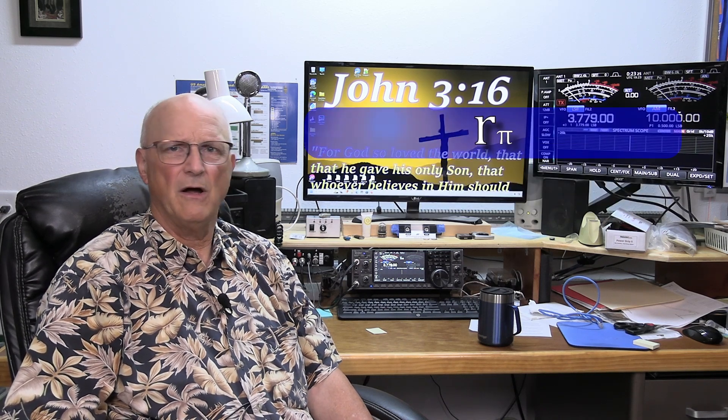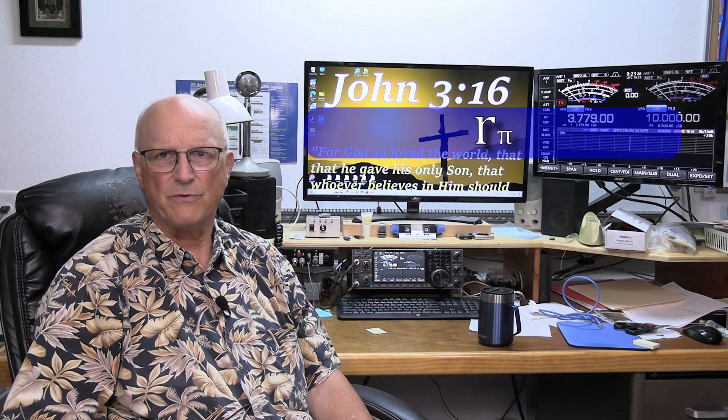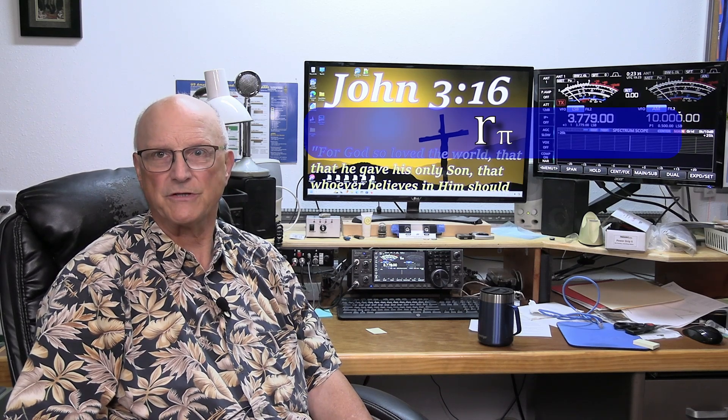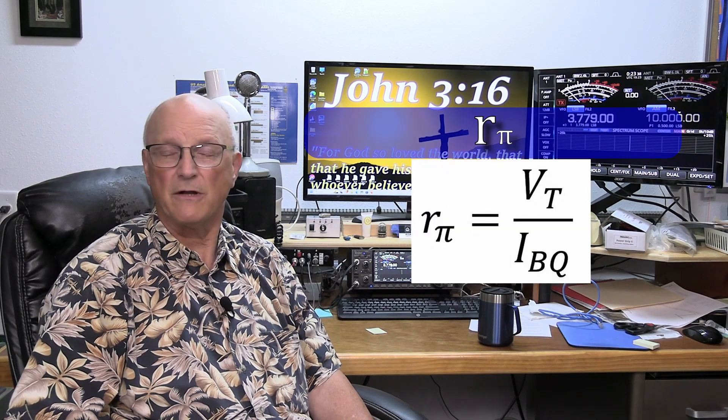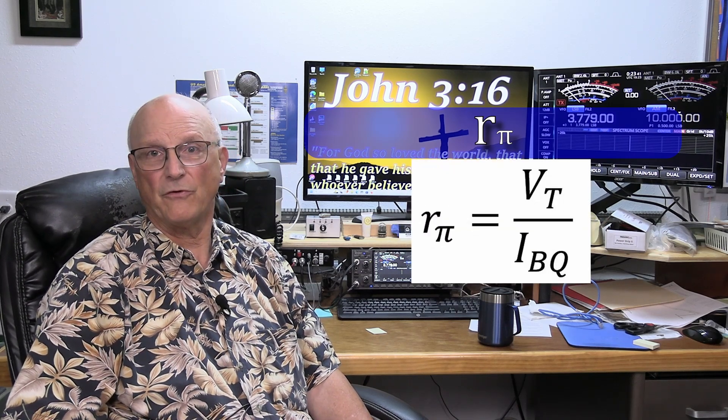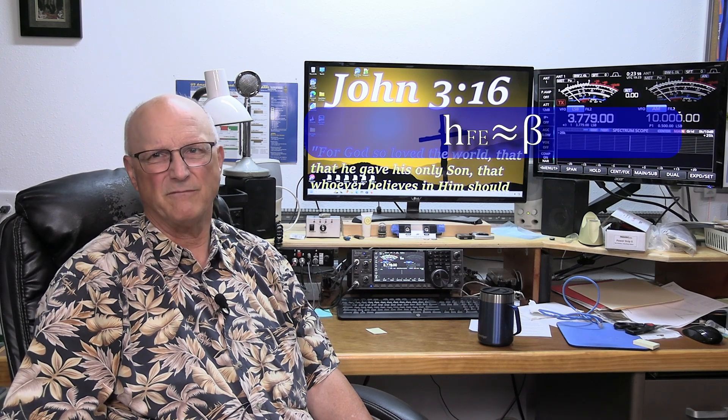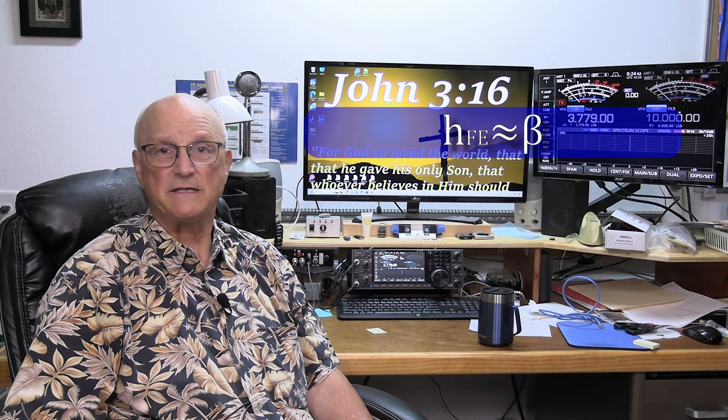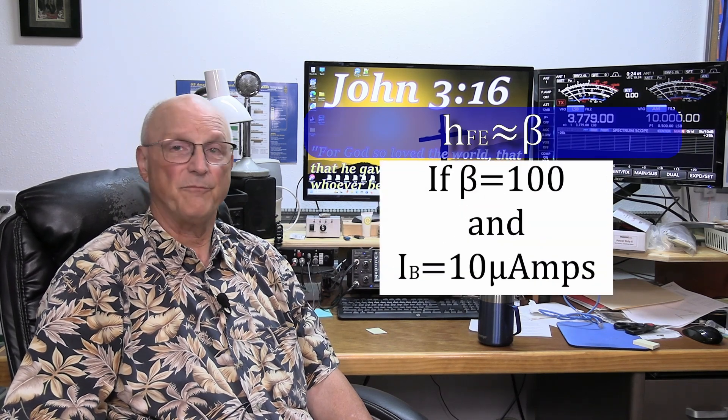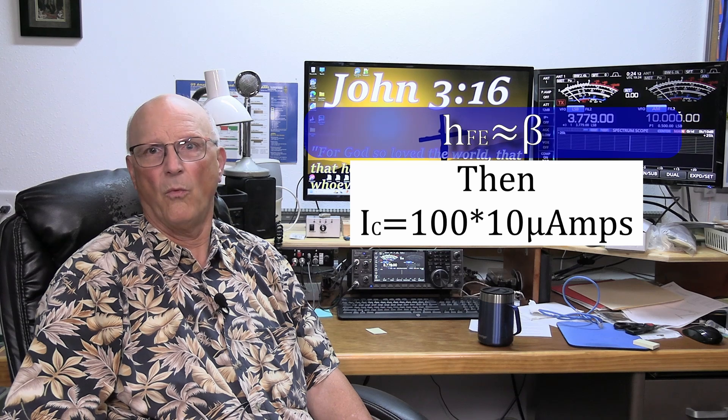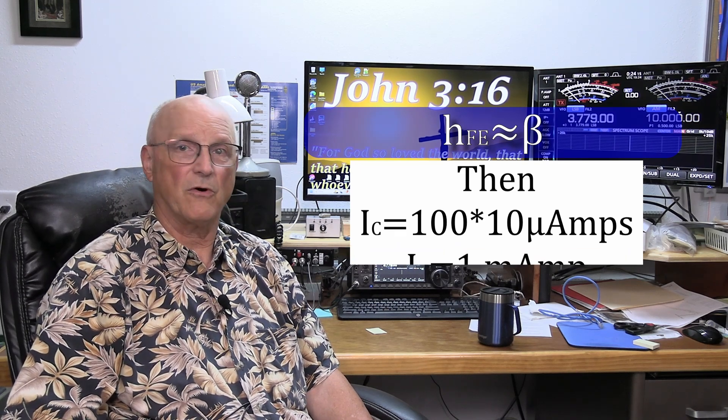You will also see the symbol Rpi. This is the input resistance of the transistor itself and is a function of the quiescent base current and the thermal voltage. It can be calculated using this formula: Rpi equals the thermal voltage VT divided by the quiescent base current I sub Bq. Then there is H sub Fe and beta which are used almost interchangeably. It refers to the DC current gain of the transistor. If beta equals 100 and the base current is 10 microamps, then the collector current will be 100 times 10 microamps or 1 milliamp.